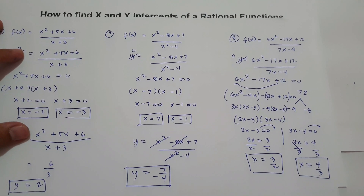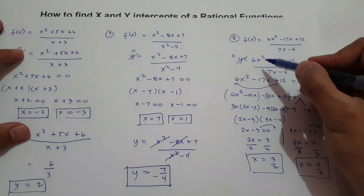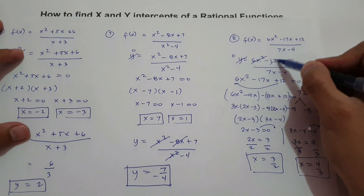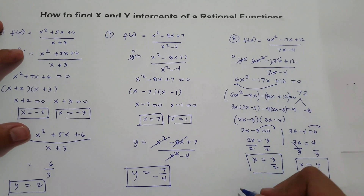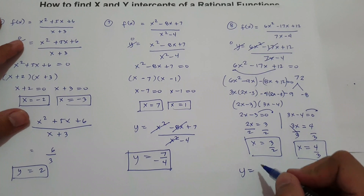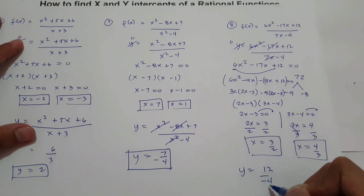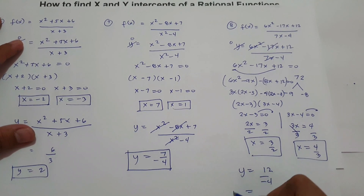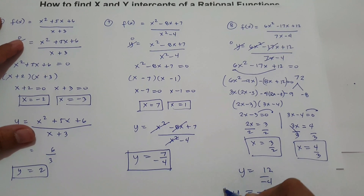For y intercept of number 8, substitute x = 0: all x terms become 0, leaving y = 12 over negative 4. 12 divided by negative 4 is negative 3. So our y intercept is negative 3.